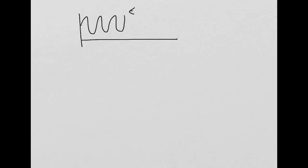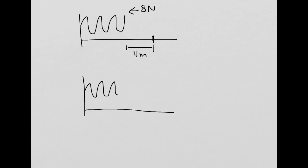Let's say that I have a spring attached to the wall. I apply 8 newtons of force and compress it, and its natural length — let's call it here — a distance of 4 meters. I want to ask you guys: what force would I need to compress the spring to a distance of 6 meters from its equilibrium point?